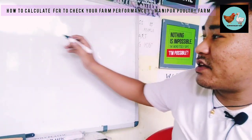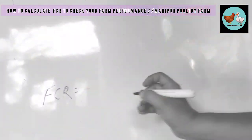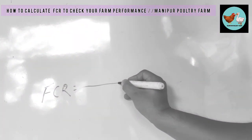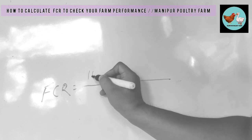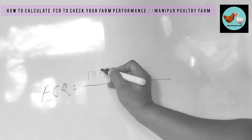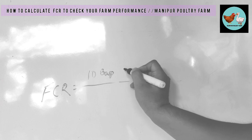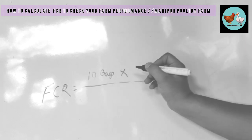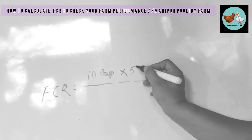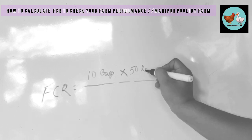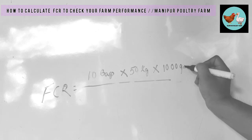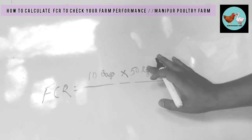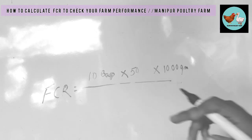We are trying to calculate FCR. The FCR is the bactra, and the bactra here: 10 bags into 50 kgs, 50 kgs, 1 kg, 1000 grams — 1000 grams, 10 bags.